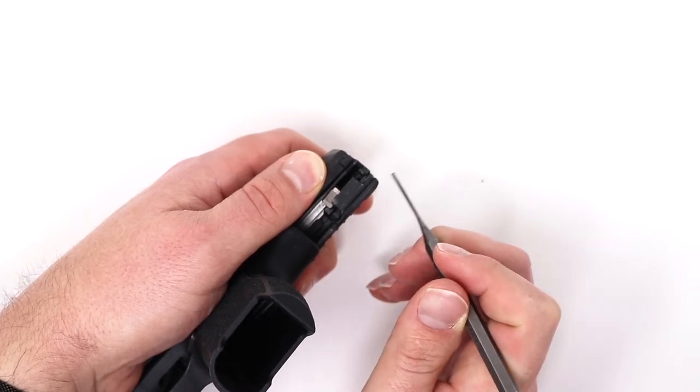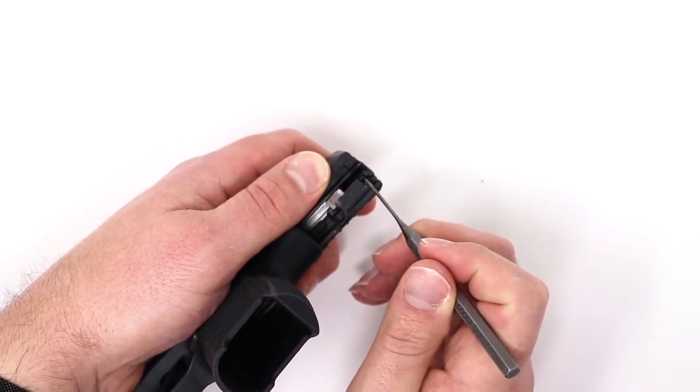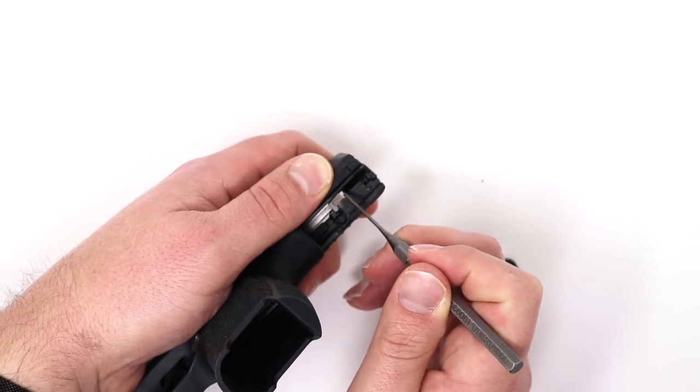In some of the later models like the SAS 2020, this piece here would push into the center channel and then pull down.